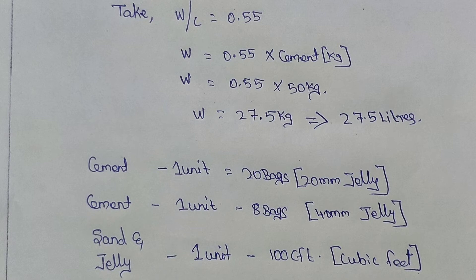We will check the water ratio. We can add 0.52 to 0.6% of water. In this case, we will mix 0.55% of water. We will mix in 1 bag of cement, 50 kg of cement.